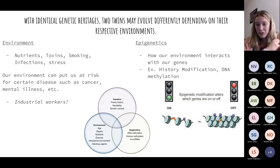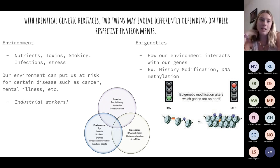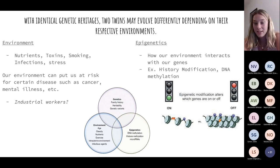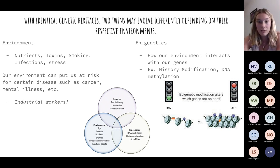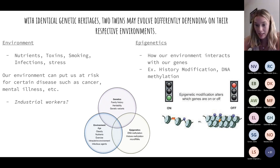When we talk about environment and epigenetics, my favorite statement is: with identical genetic heritages — meaning identical twins — they might evolve differently depending on their environments. Our environment consists of the foods we eat, possible toxins, smoking, infections, increased stress, et cetera. So people with different environments might adapt and grow older with different diseases and different issues. This is where epigenetics comes into play — it's how the environment interacts with our genes. Certain environmental stressors can actually turn on or off some genes that can really impact our growth and development.